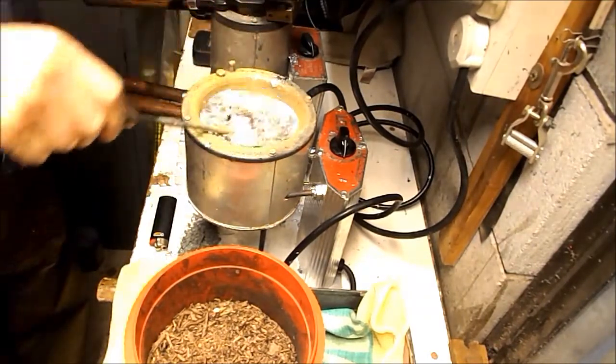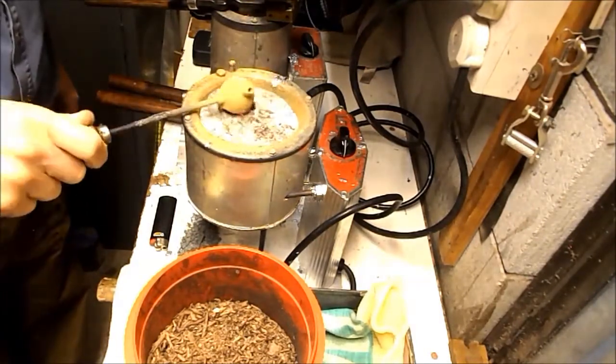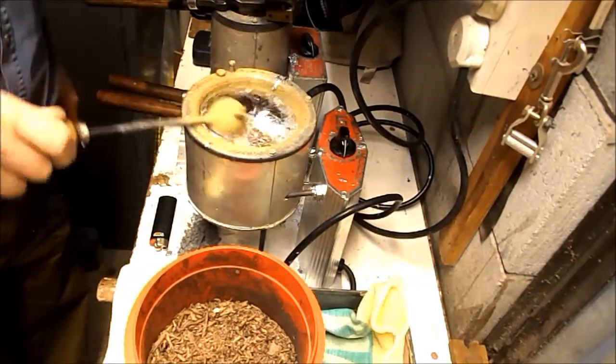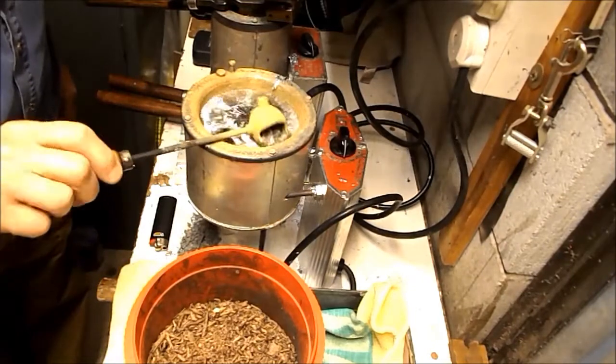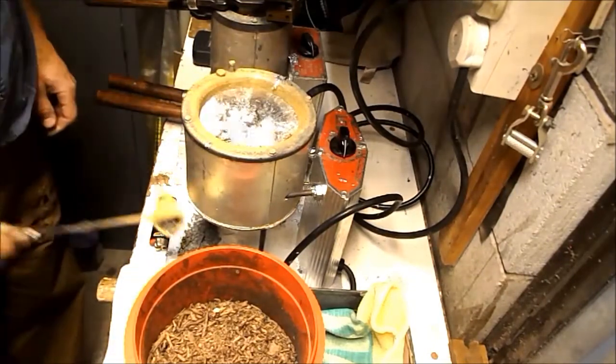If we're melting down bullets that we've cast previously, you'll see the odd gas check will pop up or all sorts of stuff. So we scoot this around and with our ladle pour off any excess lead there.